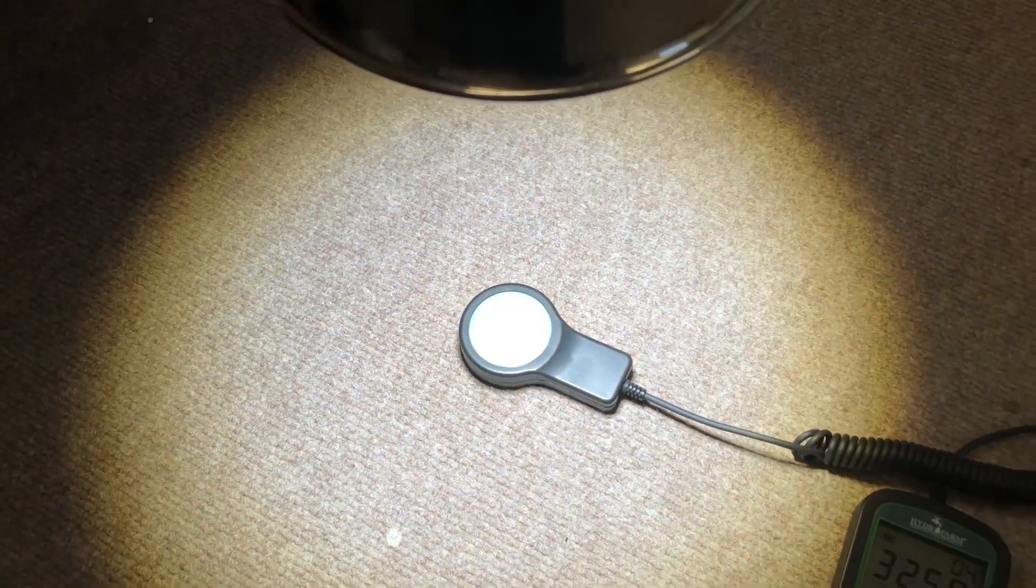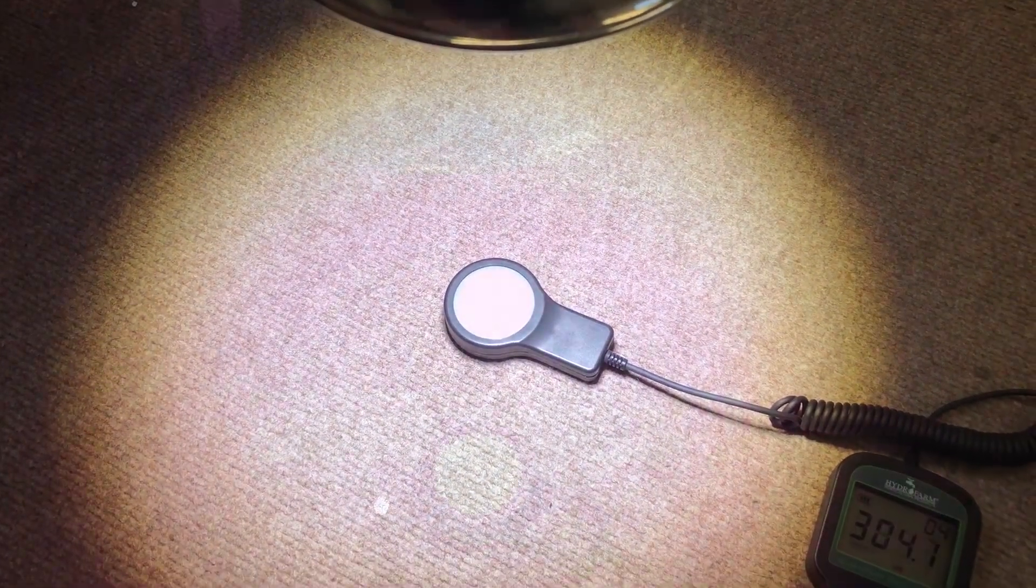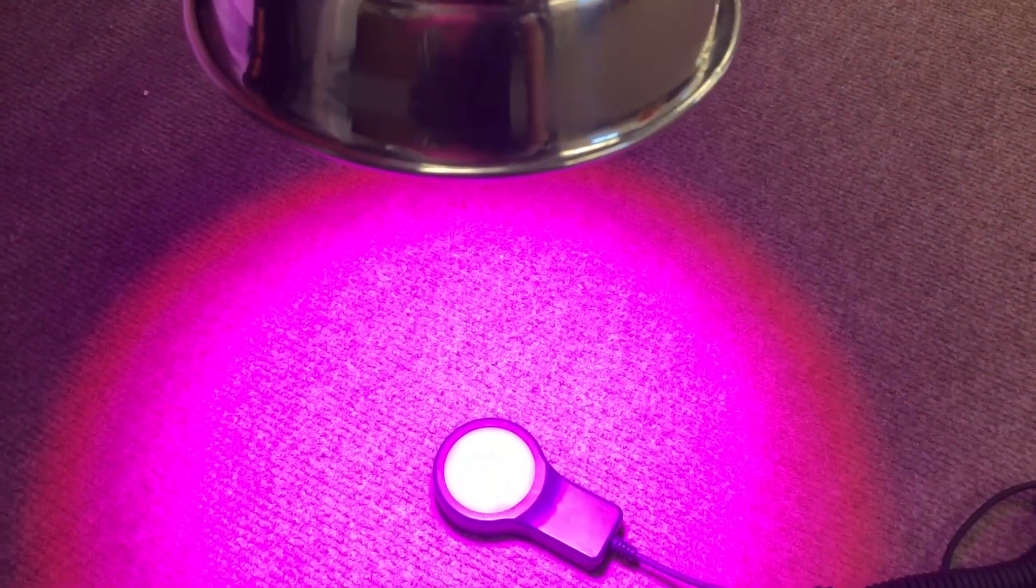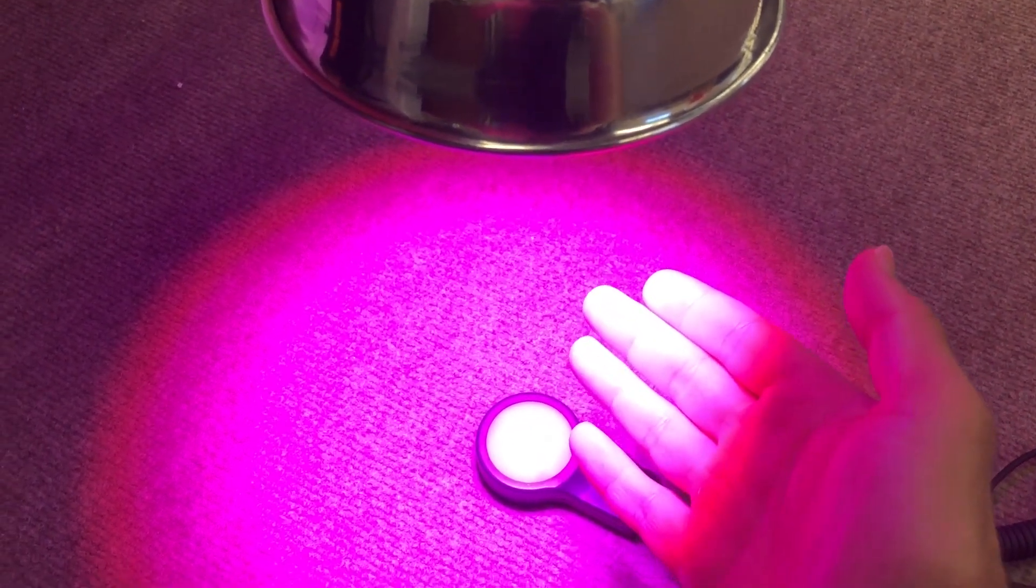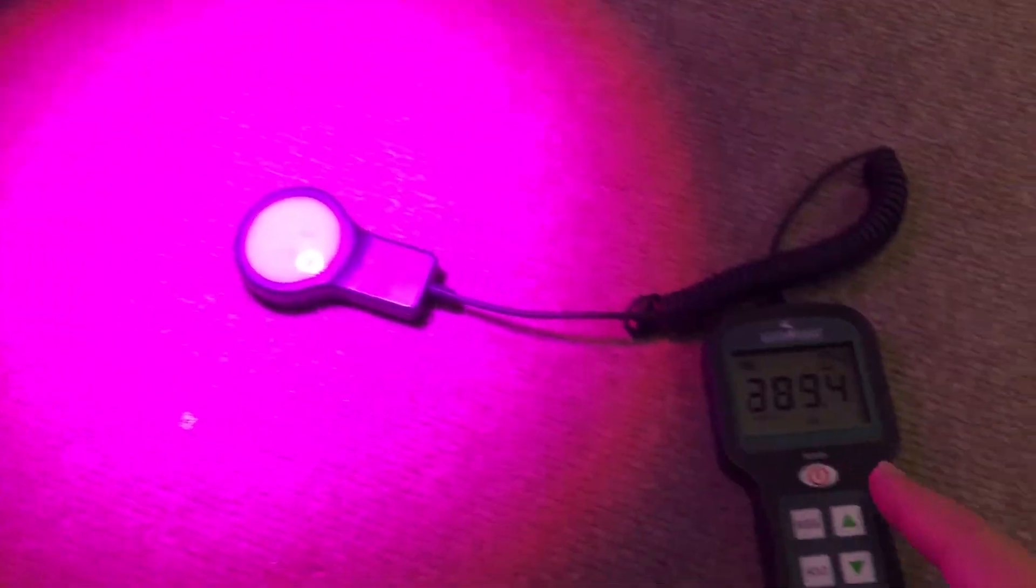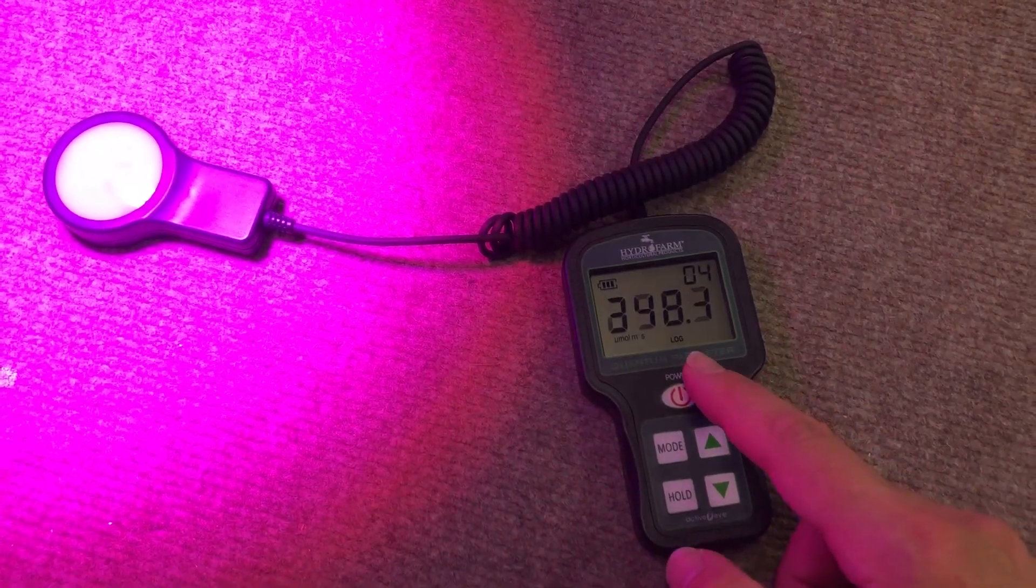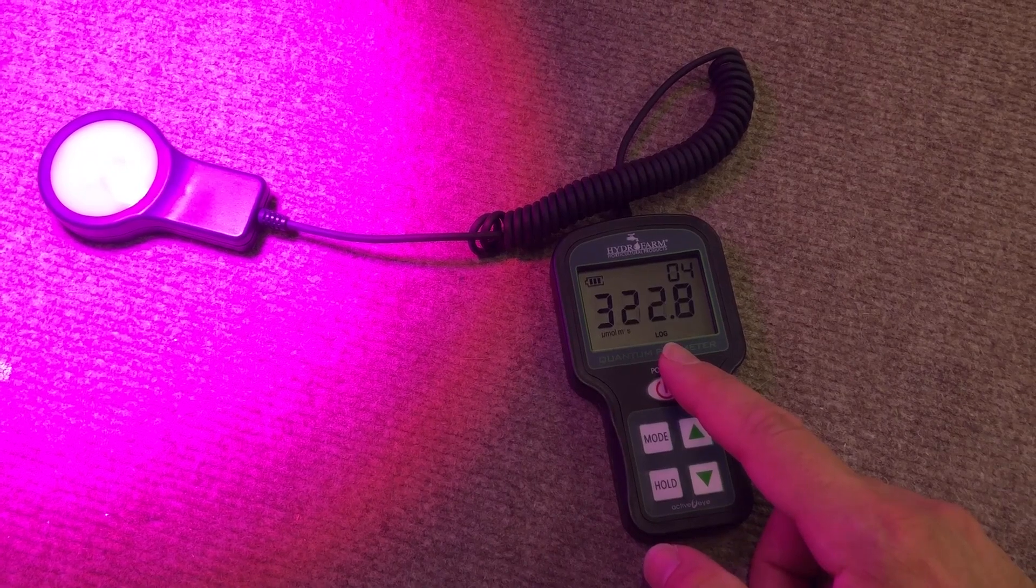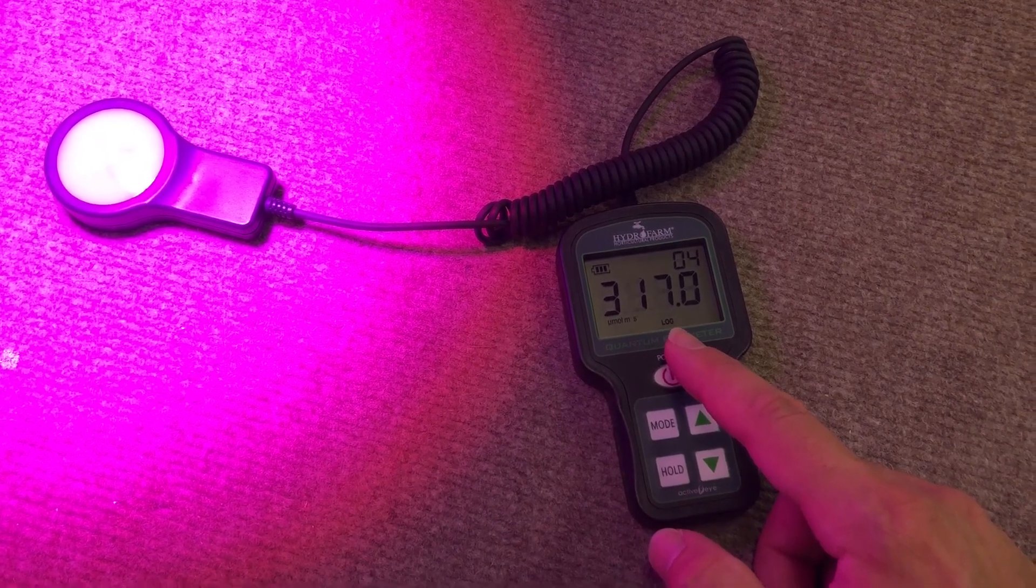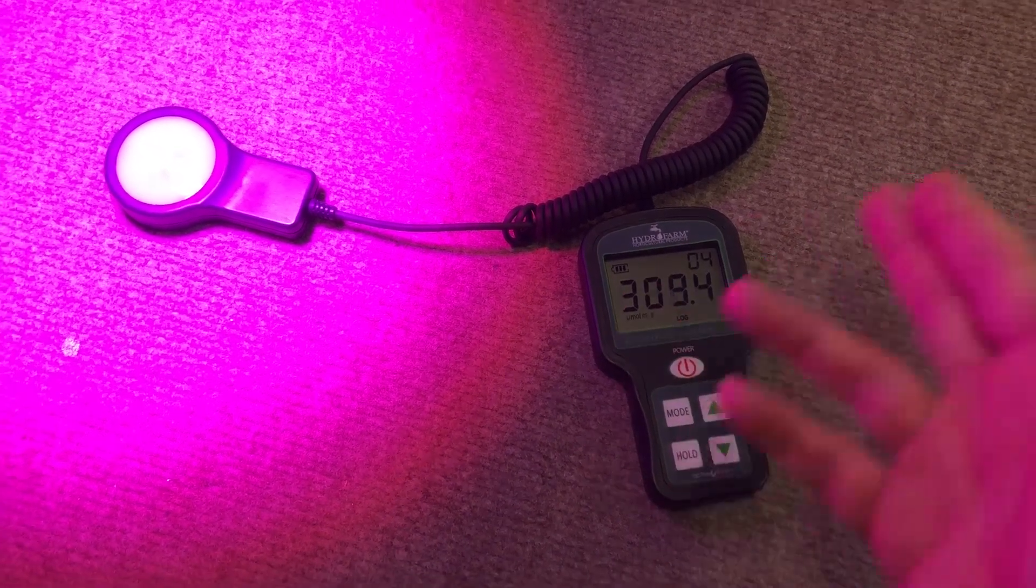So now we're going to put the other light in here, the red-blue light, and see what happens. Okay, now I got the red-blue LED in there, or as some people call them, blurple lights. And you can see the reading on the PAR meter is basically about the same. It's ranging anywhere from 300 to about 325, and it keeps changing,